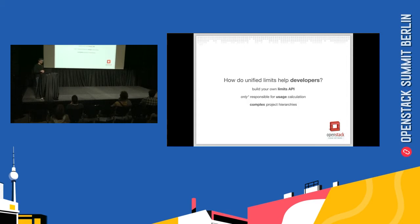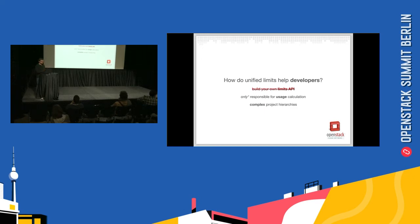How does this help developers? Developers no longer need to build their own limits API. They're really only responsible for usage enforcement — and I put an asterisk there because I don't want to downplay it; it can still be a complicated problem — but now you're not having to solve two different things. You just have to calculate the usage of resources under a given project and work with that data. That also eliminates projects from having to understand the complicated tree structure you can get from Keystone since we support hierarchical multi-tenancy. If you get back a tree of projects that is n levels deep and you're trying to figure out how the limits work, we're trying to isolate all of that logic into a couple of key places so we're not reinventing the wheel across all these services.